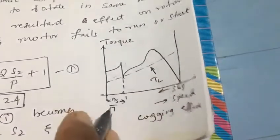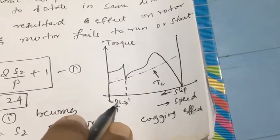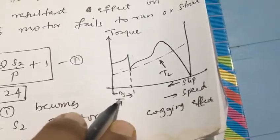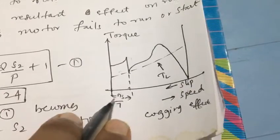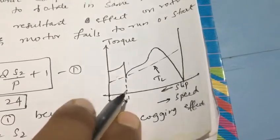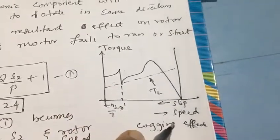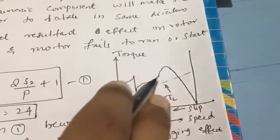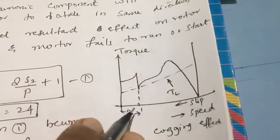Here the machine is coming to resting condition where the harmonic component is the 7th one and the speed here is ns/7. So this is the cogging effect that we are going to see in the case of slip ring three-phase induction motor.